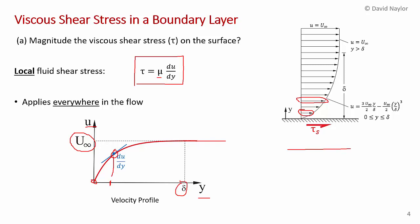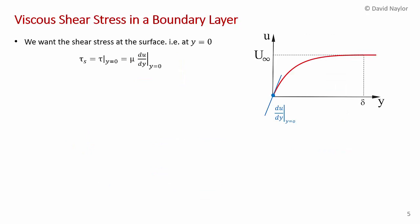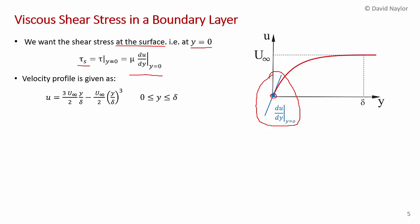In part a, we want the shear stress at the surface, at y = 0. So we evaluate τ_s = μ (du/dy) at y = 0. The velocity profile inside the boundary layer is u = (3/2) u∞ (y/δ) − (u∞/2)(y/δ)³, which applies from y = 0 to y = δ. We need to take the derivative of this expression and then apply it at y = 0.